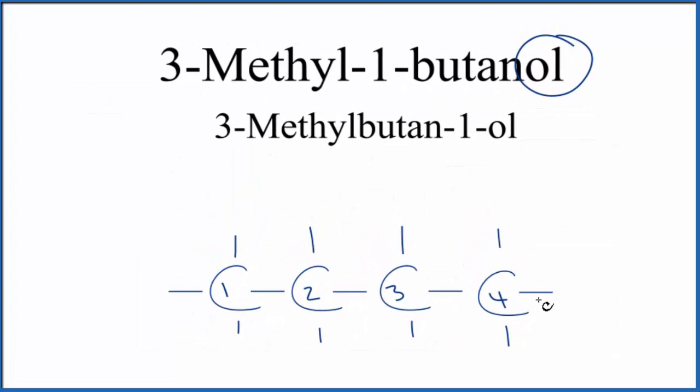So we've numbered our 4 carbons here, 1, 2, 3, 4 carbons, and it tells us that on that first carbon here, we're going to have that alcohol. So let's put an alcohol right here on that first carbon.